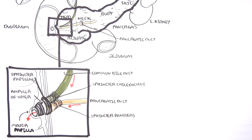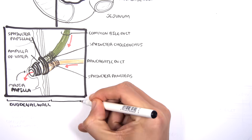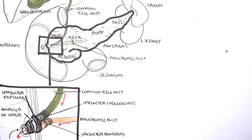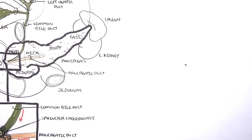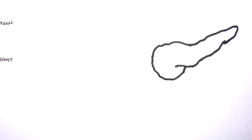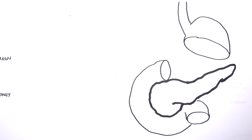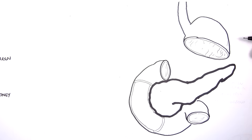The major duodenal papilla is the opening into the duodenum. Let's take a closer look at the pancreas and its physiology — how it helps in food digestion and what stimulates its function.